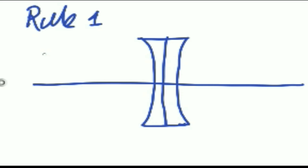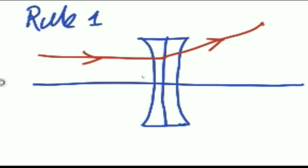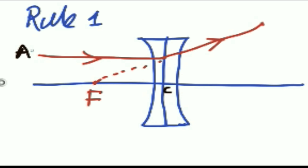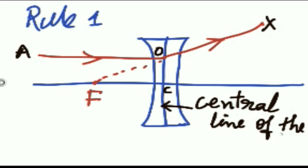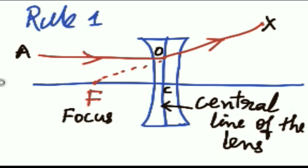You can visualize that if you trace the refracted light after the lens, you will feel that the light is coming from the focus point F. The details of the lens diagram are shown here: C is the optical center, AO is the incident ray on the lens, and OX is the refracted ray. This middle line of the lens is called the central line, and this OX refracted ray seems to be coming from the point F — that is rule number one.